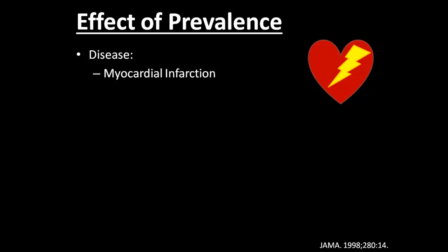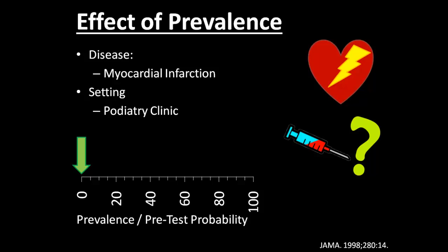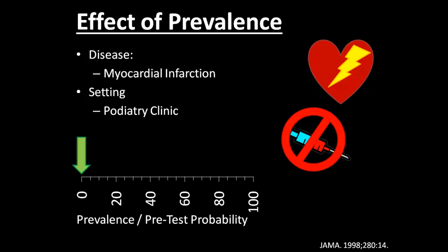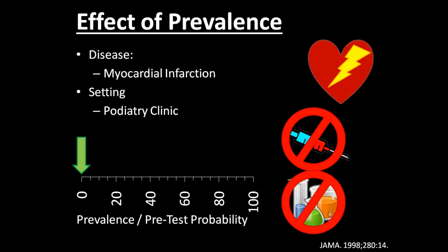Let's take a look at the effect of this prevalence or pretest probability. If we pick a disease — myocardial infarction or heart attack — there's a scale of the pretest probability from 0% to 100%. This also depends on the population. If we pick a population like a podiatry clinic, most patients aren't going to have that disease, so the pretest probability is very, very low. In this situation, the risks of treating everybody in this population probably outweigh the benefits, so we wouldn't treat. Also, the risk of heart attack is so low that it's probably a bad idea to check every single person in the population for the disease, so we wouldn't test in this situation either.